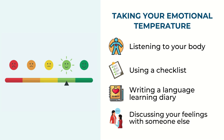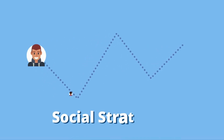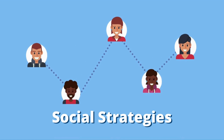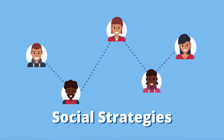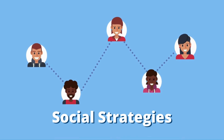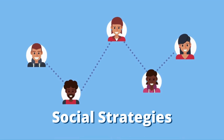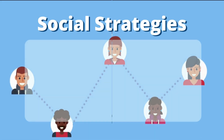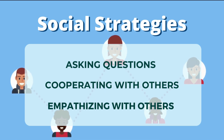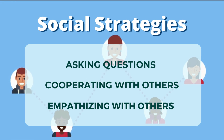The next group of strategies is social strategies. Language is a form of social behavior — it is communication, and communication occurs between and among people. Learning a language thus involves other people, and appropriate social strategies are very important in this process. There are three sets under this group: one, asking questions; two, cooperating with others; three, empathizing with others.